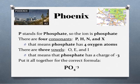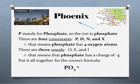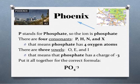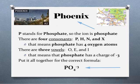Our last word is phoenix, and I think the biggest challenge in phoenix is remembering how to spell it. The P in phoenix stands for phosphate, so our polyatomic ion is the phosphate ion. There are four consonants — P, H, N, and X — which means the phosphate ion has four oxygens. There are three vowels — O, E, and I — which means the phosphate ion has a charge of negative three. Our formula is PO4³⁻.